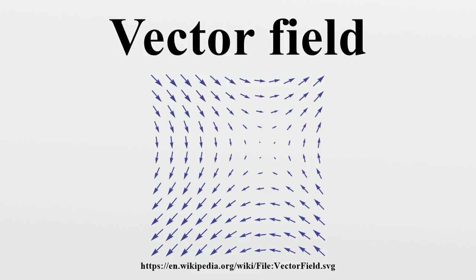History: Vector fields arose originally in classical field theory in 19th century physics, specifically in magnetism. They were formalized by Michael Faraday in his concept of lines of force, who emphasized that the field itself should be an object of study, which it has become throughout physics in the form of field theory. In addition to the magnetic field, other phenomena that were modeled as vector fields by Faraday include the electrical field and light field.